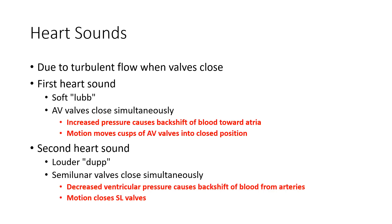Lastly, we'll speak about heart sounds. Heart sounds are due to the turbulence of blood flow that hits against the back of a closing valve. The first heart sound is a soft lub, occurring with the closure of the AV valves — the bicuspid and tricuspid. As those two valves close simultaneously, a slight increase in pressure causes blood to hit against the back of those closing valves, creating the turbulence we appreciate as the first heart sound. The second heart sound is louder and shorter, caused by the closure of the semilunar valves — the aortic and pulmonary valves closing simultaneously.